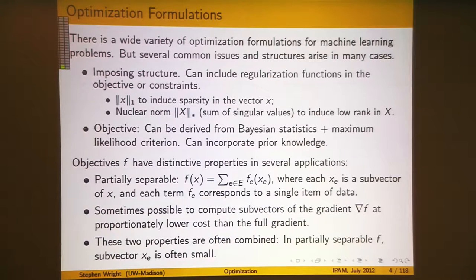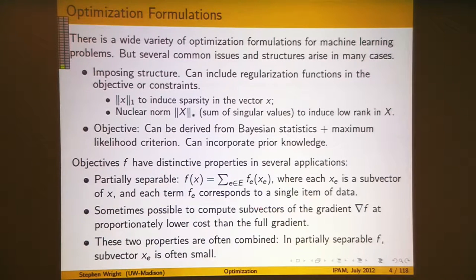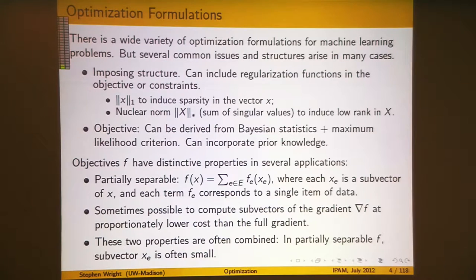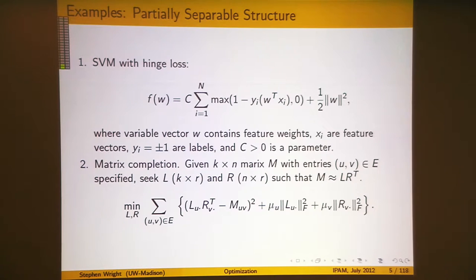If the number of elements in x is very large, the gradient of f has the same length as x. It might be possible to get subvectors of the gradient at much cheaper cost than the full gradient. That's particularly interesting when you want to use decomposition algorithms that minimize over subvectors at any one time.